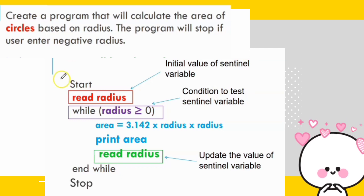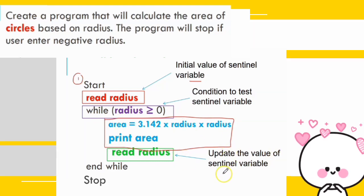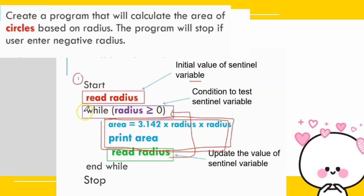For the pseudocode: start, then read radius — this is the initial value of the sentinel variable. Then: while radius is greater than or equal to zero — this is the condition to test. If true, the computer executes: area = 3.142 × radius × radius, then print area. To repeat, update the sentinel variable by reading radius again. This loop continues until the condition is false, then stop.